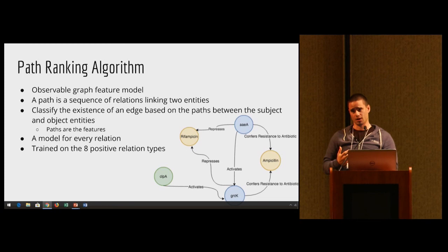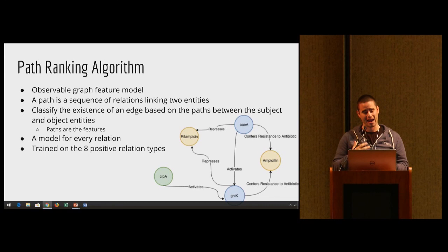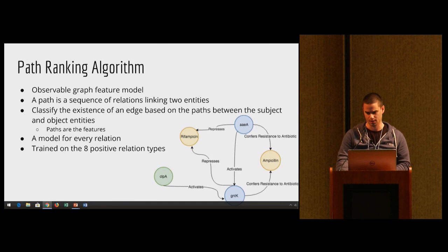The path ranking algorithm is the observable graph feature model that we're using. This gives us more of a localized perspective over the graph by using paths as features to this model. Paths are a sequence of relations linking two entities. You use these paths to classify whether or not an edge should be true or false in this knowledge graph. Again, we train this on the eight positive relation types.